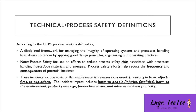According to the Center for Chemical Process Safety, process safety is defined as a discipline framework for managing the integrity of operating systems and processes that handle hazardous substances. We do that by applying good design principles, good engineering practices, and good operating practices — reducing the frequency and consequences of potential incidents.